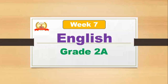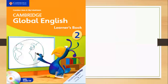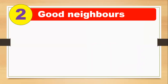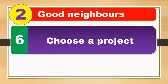Hello, my dear students. Assalamu Alaikum. This is your English class and this is week number seven. Here is your English learners book, page 32. Today is 11/10/2020, so you have to write this date in your books. We are in unit number two: Good Neighbors, and this is the last lesson from unit two.